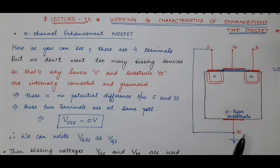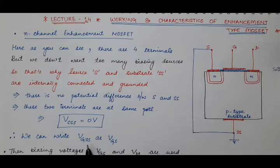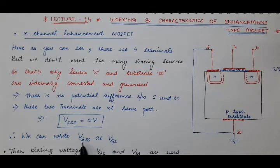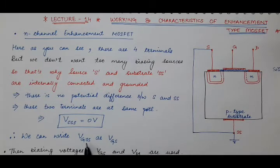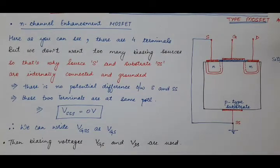Since the potential difference between source and substrate is 0, the biasing voltage which we were initially denoting as VGSs can now also be denoted as VGS. Because there is no potential difference between source and substrate, we can write VGSs as VGS. We will then use biasing voltages for the gate terminal and drain terminal.